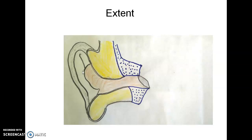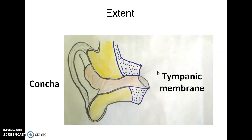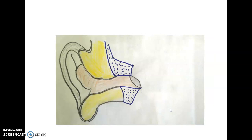The extent of the external auditory canal is from the concha — the depression on the outer portion of the pinna — to the tympanic membrane, or eardrum, on the inner end.